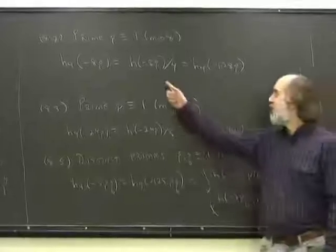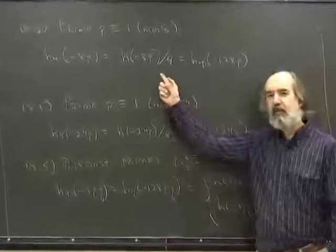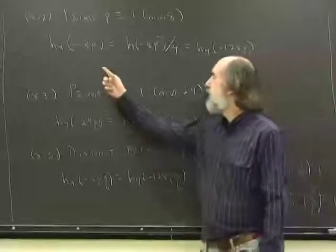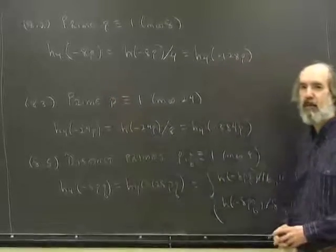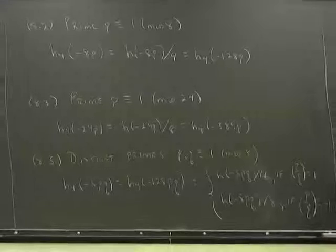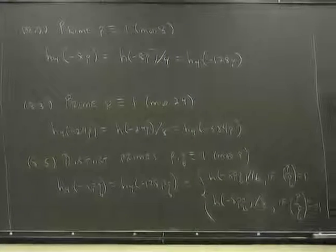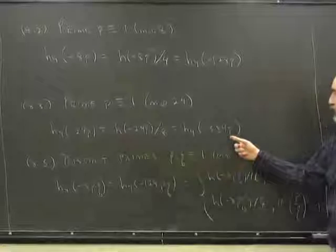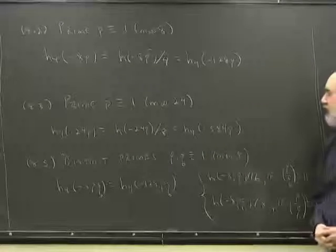The h of minus 8p is the order of the class group of discriminant minus 8p and the h sub 4 is the order of the subgroup of fourth powers. And in each of these three statements, you're comparing h sub 4 of a given discriminant with h sub 4 of 16 times the discriminant.